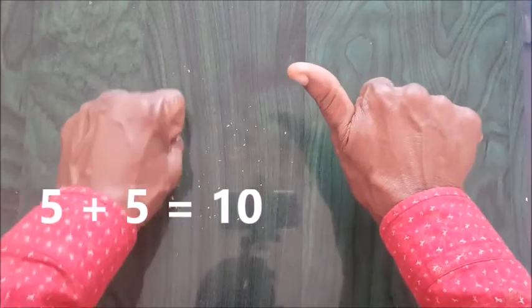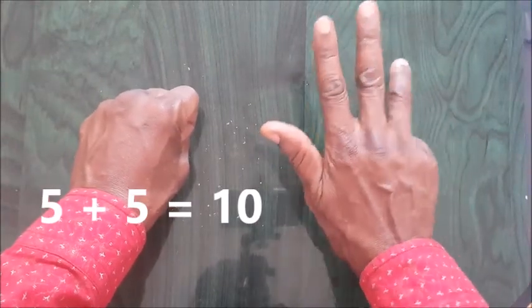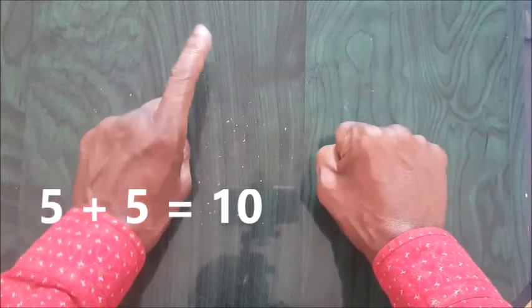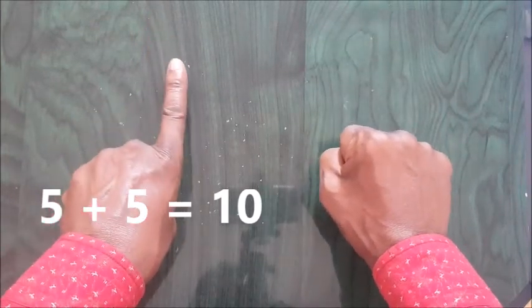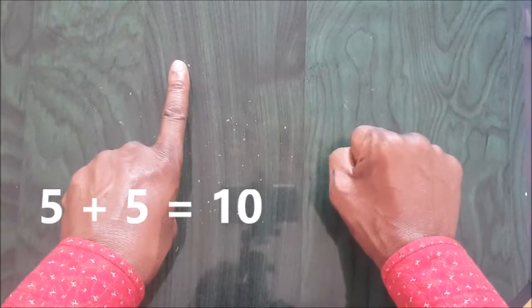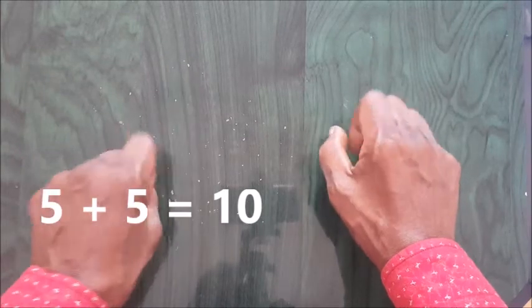Now we have 5 plus 5. This is 5. So I'll count 1, 2, 3, 4. Then I'll close here and shoot up this 5. So 5 plus 5 equals to 10. 5 plus 5 equals to 10.